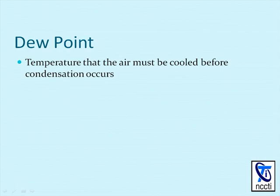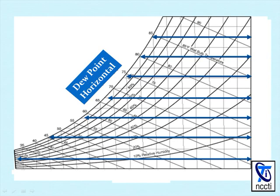Dew point is the temperature that the air must be cooled before condensation occurs. As you can see, the dew point temperature is represented by horizontal lines. The dew point temperature values are located on the top left-hand side of the chart.